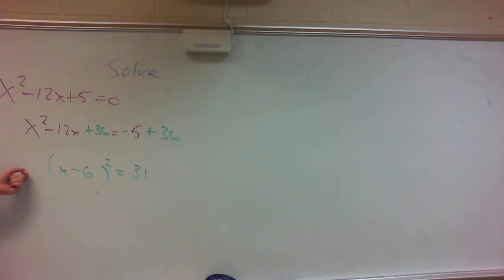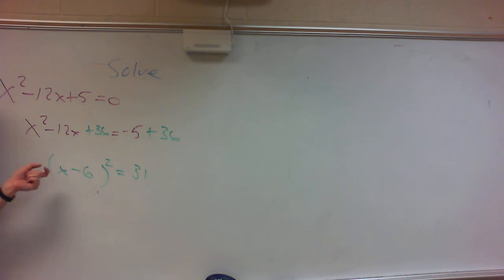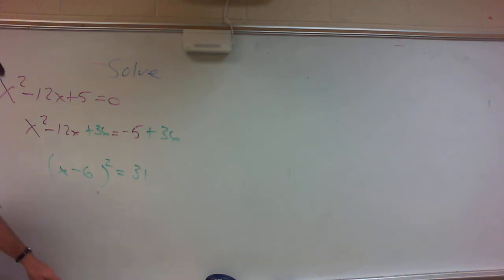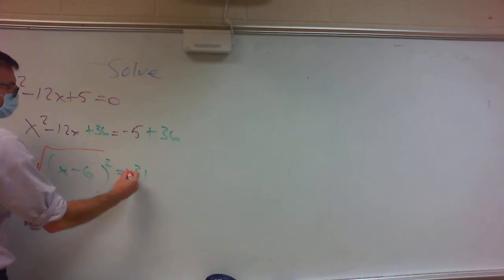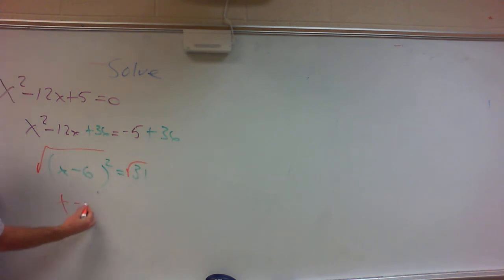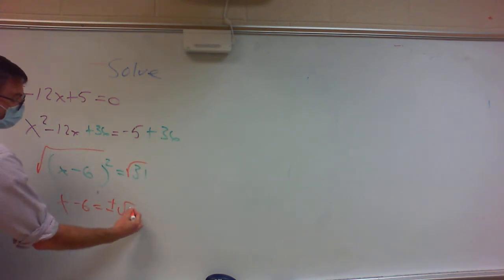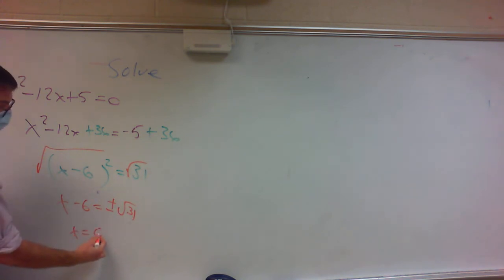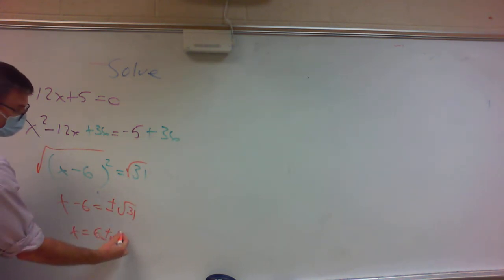This looks like a problem I made you do earlier — in fact, it is exactly a problem I had you do earlier. Take the square root of both sides. That gives me x minus 6 equals plus or minus the square root of 31. We end up with x equals 6 plus or minus the square root of 31.